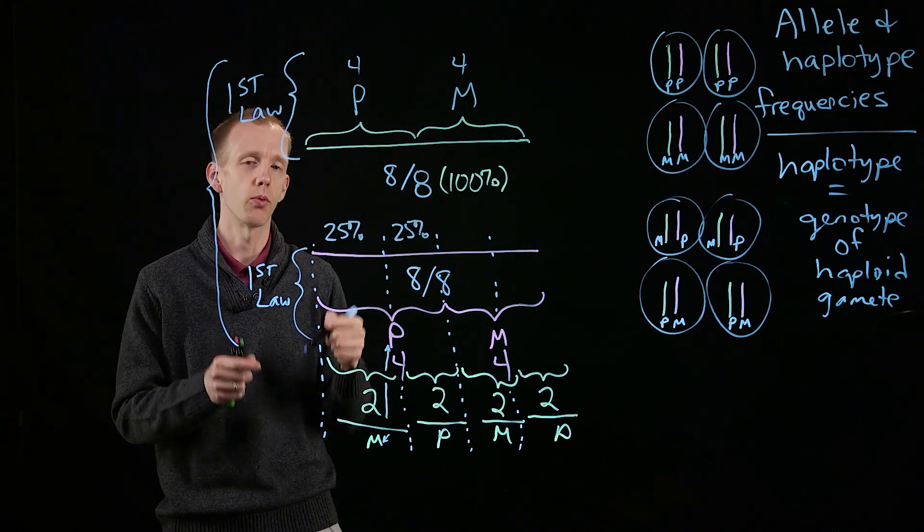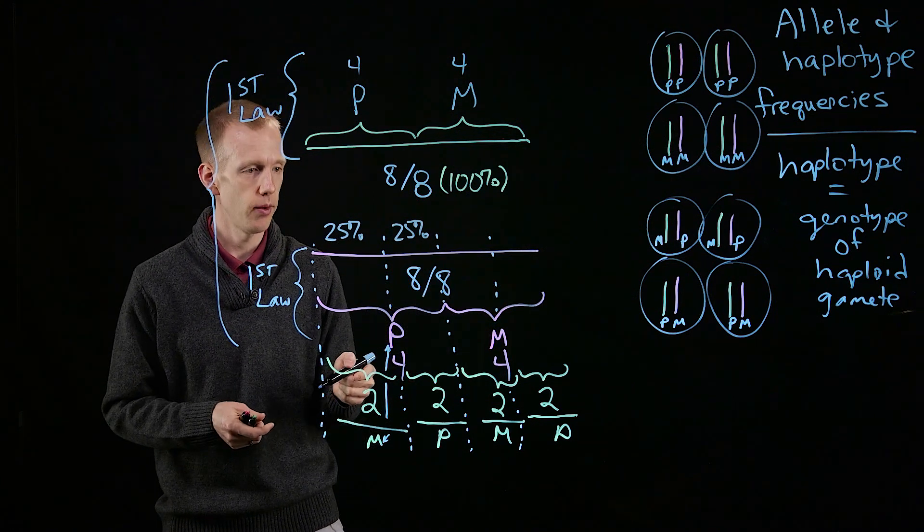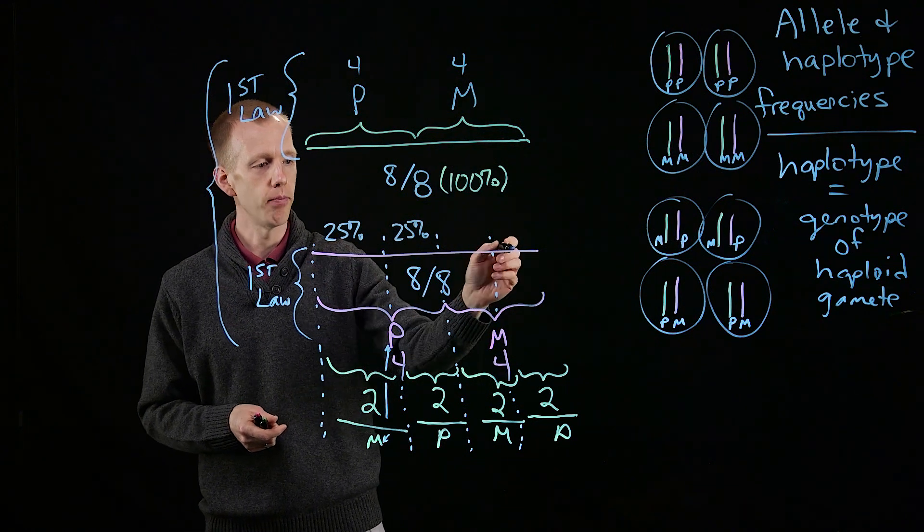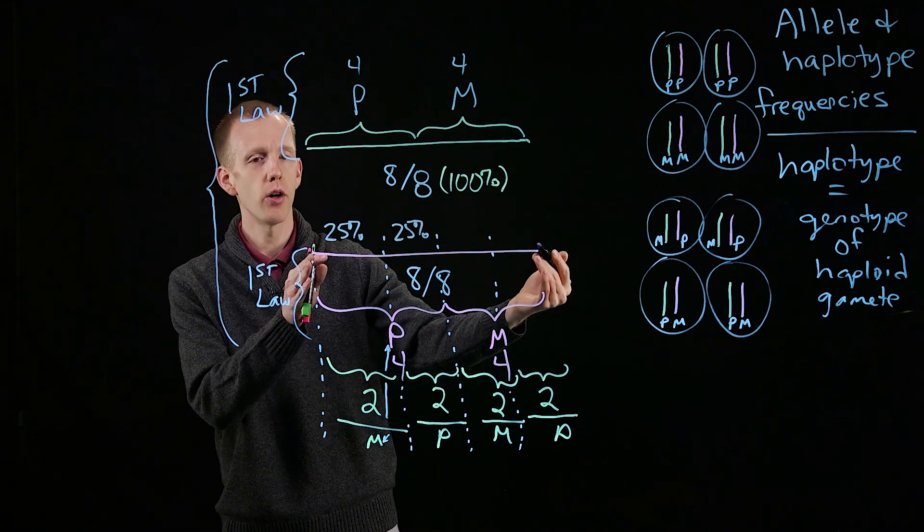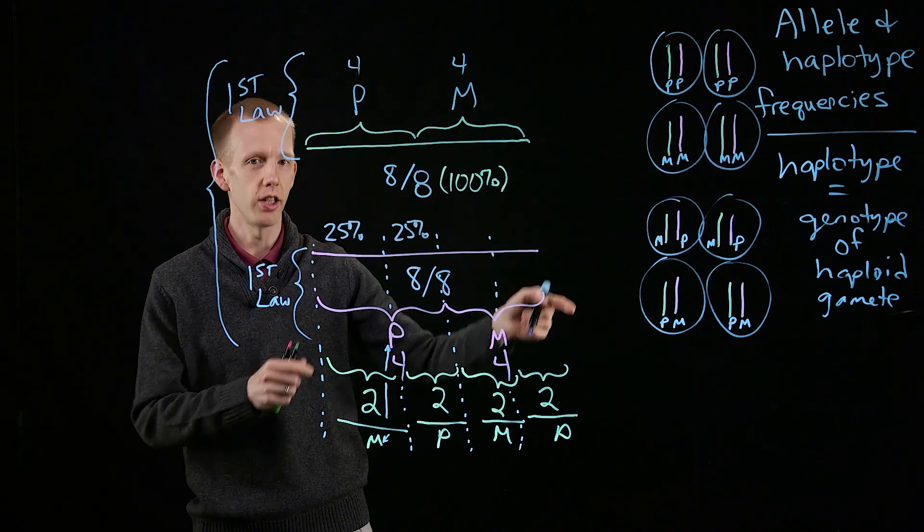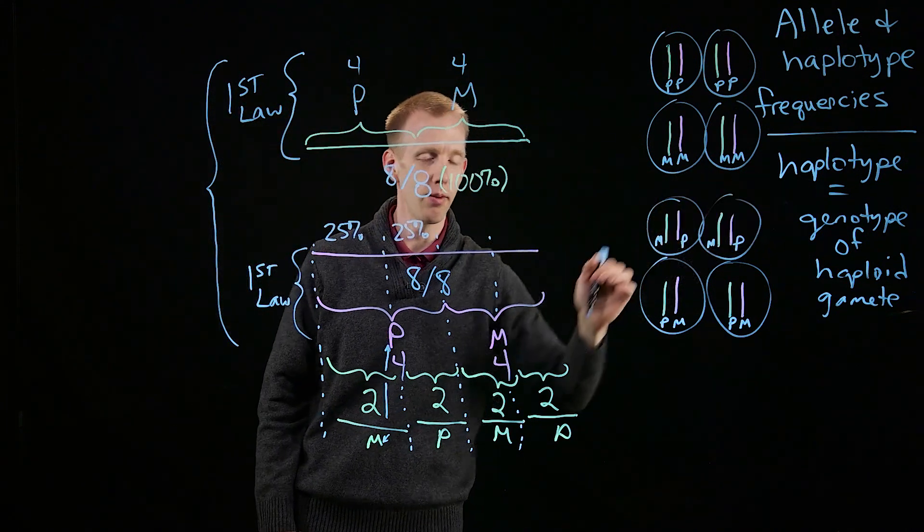And this is going to help us when we start talking about Punnett squares. That when we draw a line, that line represents 100% of the genotypes of gametes, which are also called haplotypes.